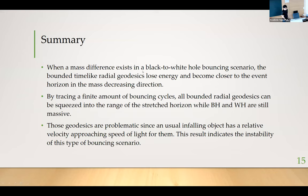Summary. In black hole to white hole bouncing scenario with the mass difference, we find that the radial geodesic lose energy and become closer to the event horizon in the mass decreasing direction. And then by tracing a finite amount of bouncing cycle, all of the bounded geodesic can be squeezed within the range of the stretch horizon while the system still very massive. And we point out that this type of geodesic are problematic since the unusual infalling object has a relative velocity approach to speed of light for them. So this result should indicate the instability of this type of bouncing model. Thank you.